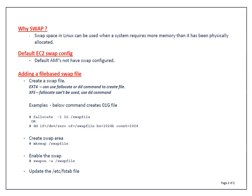First thing — why do we need swap? Swap space in Linux can be used when a system requires more memory than it has been physically allocated. For example, if you have an EC2 instance with 10 GB of physical memory and that 10 GB is not sufficient for your application or system processes, you have two options: use a higher capacity instance, which will cost extra, or add swap as a workaround. Keep in mind that with swap you will not get the same performance as with physical memory.